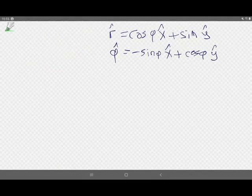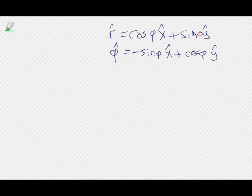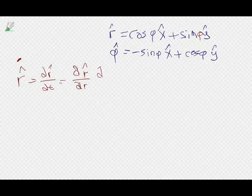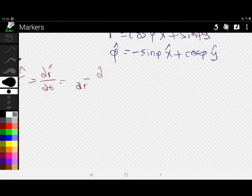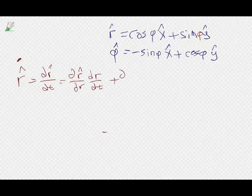Given those expressions, we can now take time derivatives of r-hat and phi-hat. Remember, x-hat and y-hat are constants. So r-hat-dot, which is dr-hat/dt, requires the chain rule. Going full rigorous: it's partial r-hat/partial r times dr/dt plus partial r-hat/partial phi times dphi/dt. But r-hat doesn't depend on r, so it's just dr-hat/dphi times phi-dot.